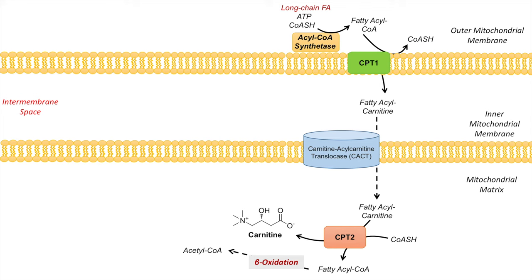We also have a carnitine that's been regenerated within the mitochondrial matrix, and this carnitine can actually be pumped back out of the mitochondria and into the cytosol. It utilizes the same transporter — the acyl-carnitine translocase — goes across the inner mitochondrial membrane, crosses the outer mitochondrial membrane, and enters the cytosol, where it can be used again as a shuttle or carrier molecule for another long-chain fatty acid.